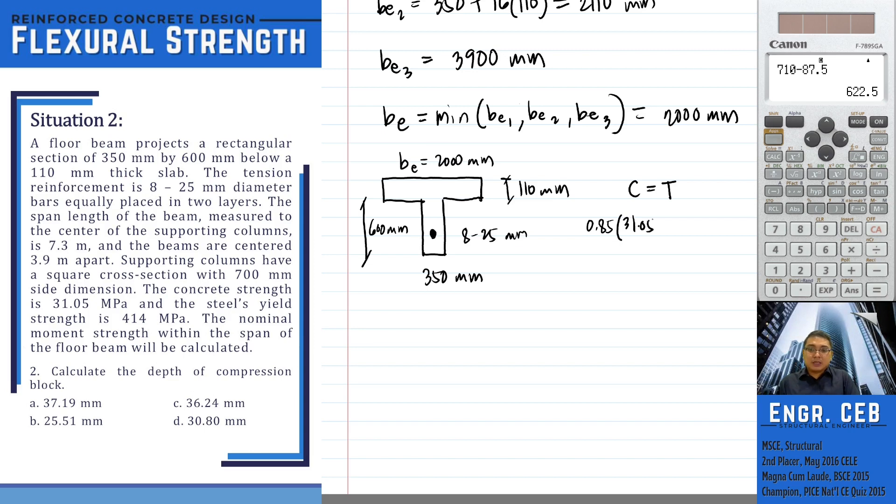Which is 2000. So meaning, this is our imaginary stress block. So let's say this is A. So this is our compression block.